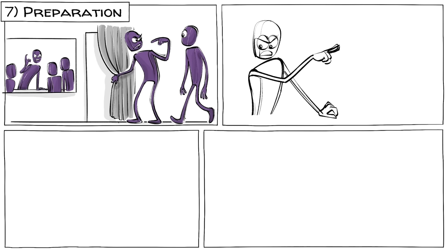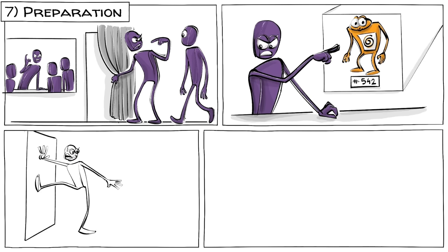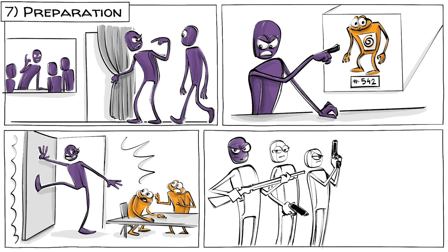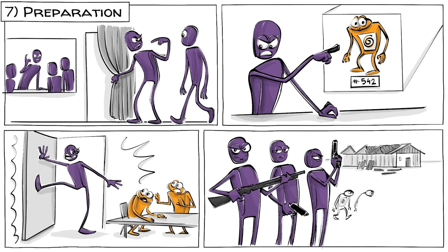Seventh is preparation. The criminals now plan for mass murder. They may identify victims by name or number, find where they live and acquire weapons or build facilities to aid their efforts.